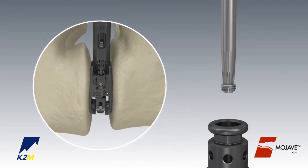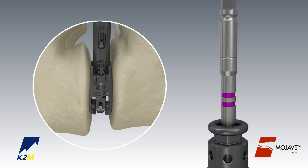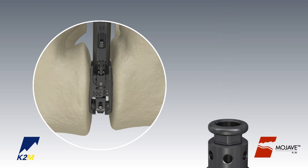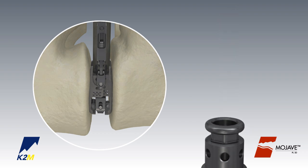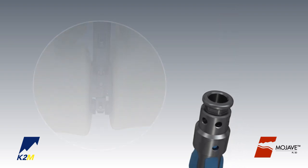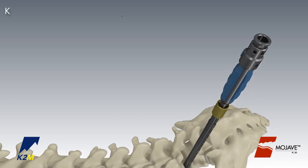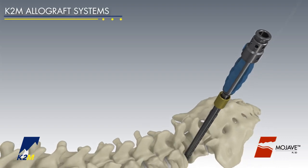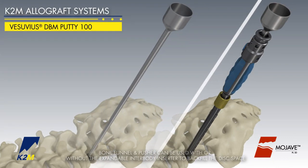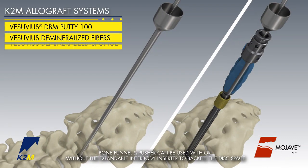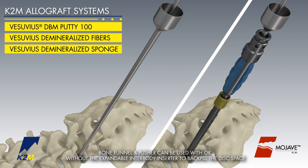Application of a locking screw is required to lock the implant in its expanded state. Once the implant has achieved the desired fit within the disc space, a bone graft funnel is available to pack additional autograft, allograft, or both into the interbody.